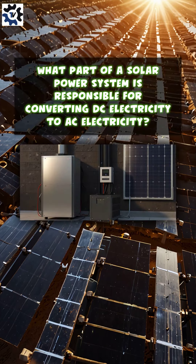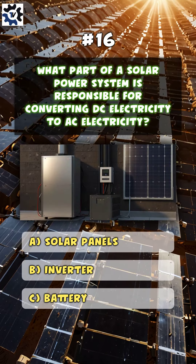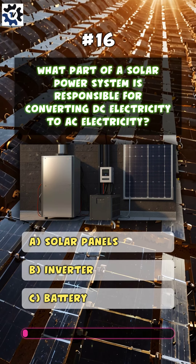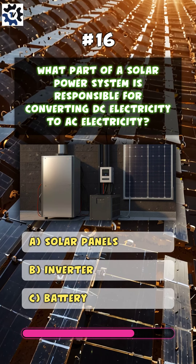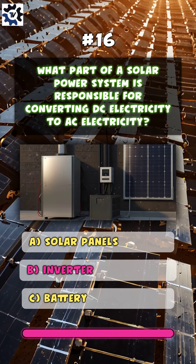What part of a solar power system is responsible for converting DC electricity to AC electricity? B. Inverter.